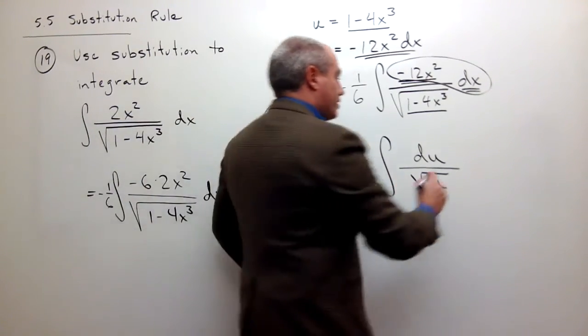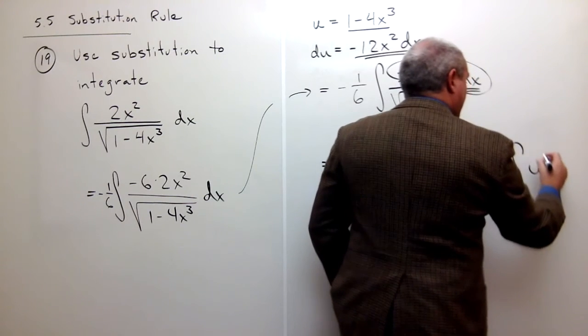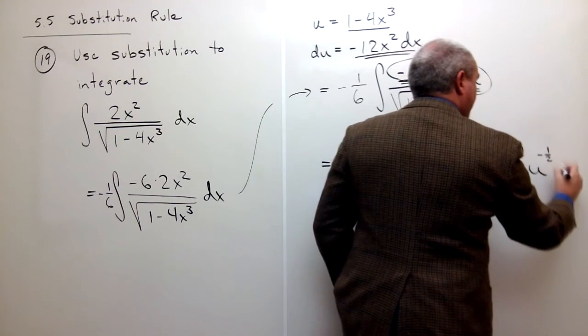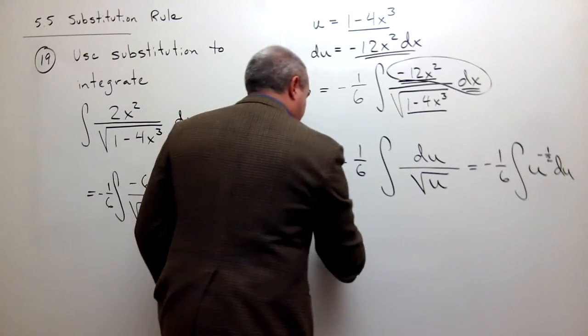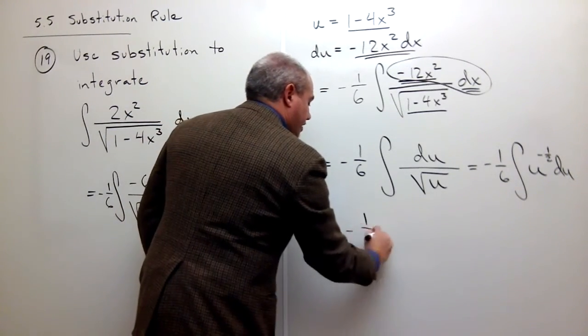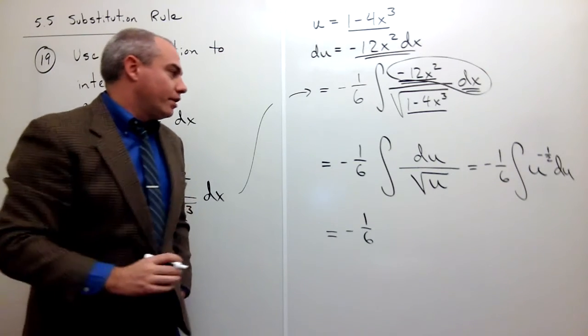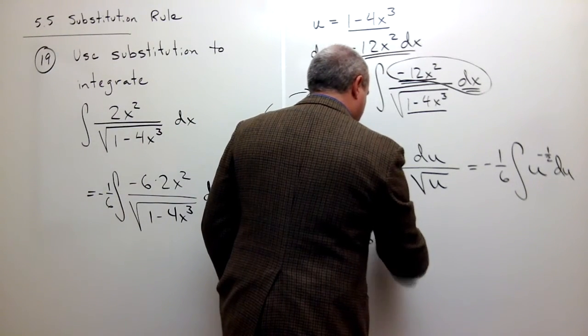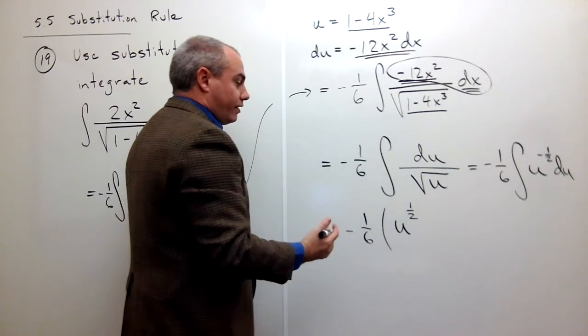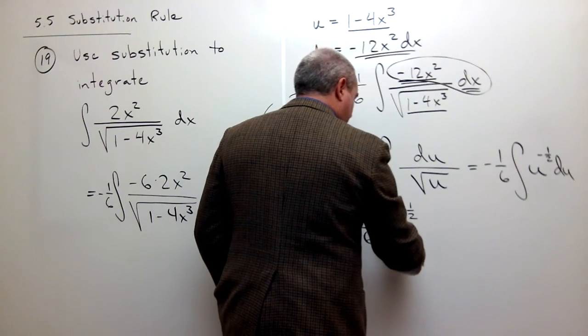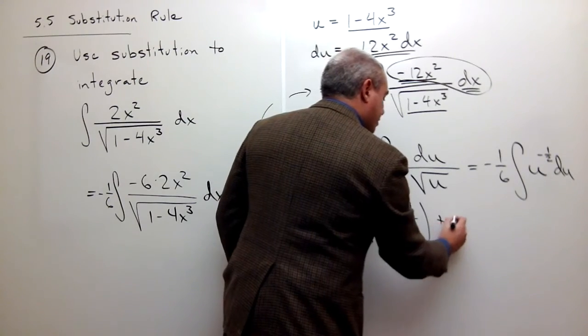This is the same as negative 1/6 integral of u to the negative 1/2 du, right? Which I can take an anti-derivative of, and I get minus 1/6. The anti-derivative of u to the negative 1/2 would be u to the 1/2 divided by 1/2. But divided by 1/2 is the same as multiplying it by 2 plus c.